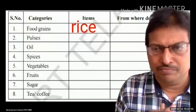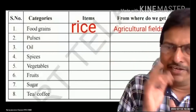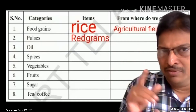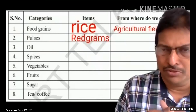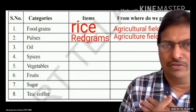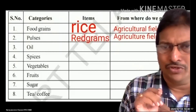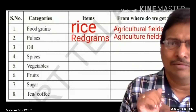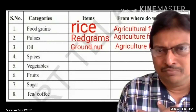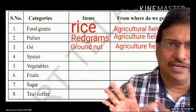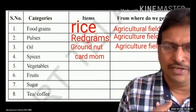Food grains — the first important ones are rice and wheat, and so many more — they come from agriculture. Next, pulses: I wrote only red grams, but there are many more like green grams. These also come from agriculture. At the end of this table you will understand the importance of agriculture. Also, groundnut comes from agriculture.